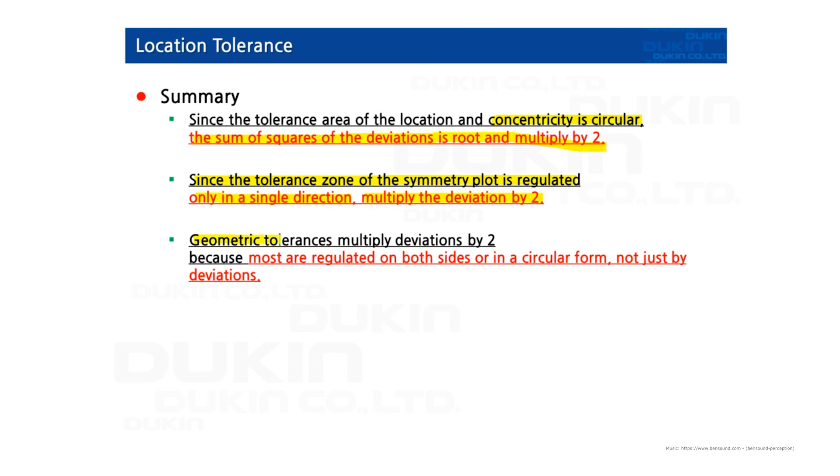So geometric tolerances multiply the deviation by 2 because most are regulated on both sides or in a circular form, not just by deviations. So that's the important things about location tolerances.